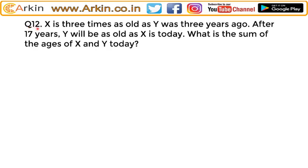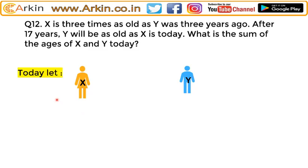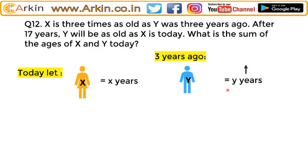X is three times as old as Y was three years ago. After 17 years, Y will be as old as X is today. What is the sum of the ages of X and Y today? Let's make the question clear: if their current ages are X and Y, then three years ago Y was Y minus 3, and after 17 years Y will be Y plus 17.